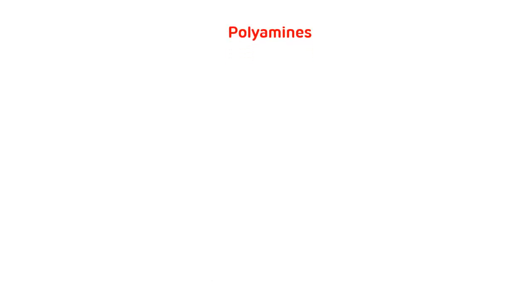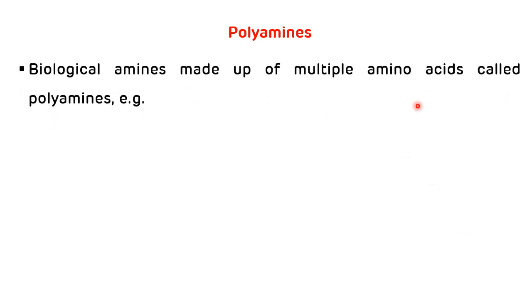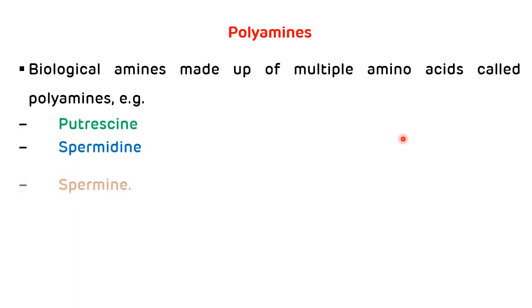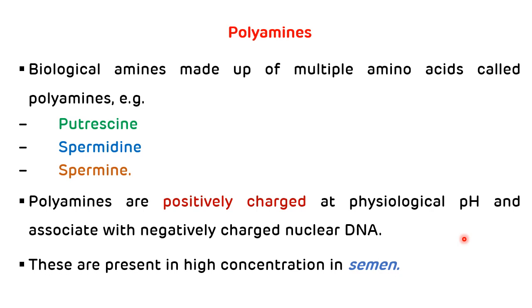Now, what are polyamines? Polyamines are biological amines made up of multiple amino groups. Examples of polyamines are putrescine, spermidine, and spermine. These three important polyamines are positively charged at physiological pH and can associate with negatively charged nuclear DNA. They are present in high concentration in semen.